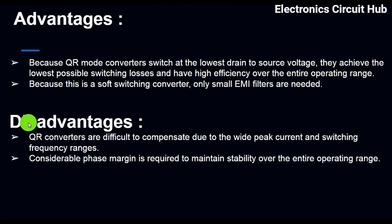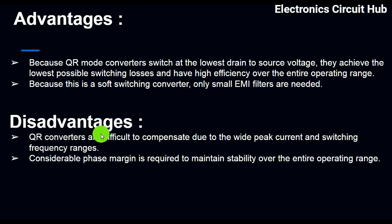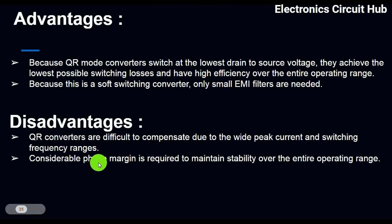The disadvantages of quasi resonant mode: QR converters are difficult to compensate due to wide peak current and switching frequency ranges. Since it works with both amplitude modulation and frequency modulation, it has wide primary peak current and wide switching frequency ranges. This makes it very difficult to design a control loop, and considerable phase margin is required to maintain stability over the entire operating range.